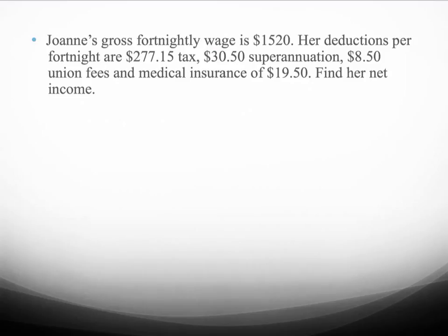So let's have a look at a couple of examples. Joanne's gross fortnightly wage is $1,520. Her deductions per fortnight are $277.15 for tax, $30.50 in superannuation, $8.50 union fees, and she pays a medical insurance contribution of $19.50 per pay. We have to find her net income.